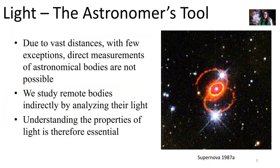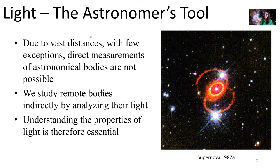Due to the vast distances of things in our universe, which you've already learned about, direct measurements of astronomical bodies are not possible except for a few things within our own solar system. We can study remote bodies by analyzing the light that comes to us from them. Understanding the properties of light is important if we're going to use light to help inform us about the universe.